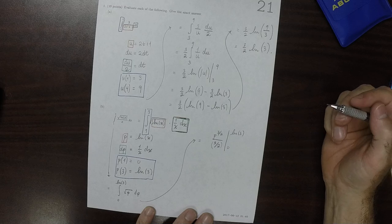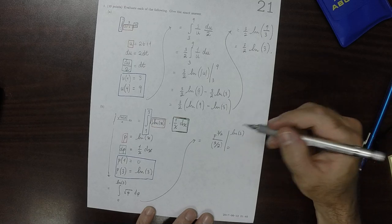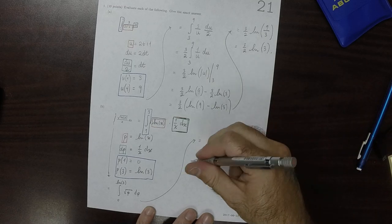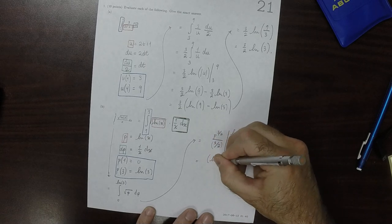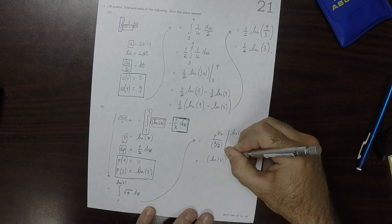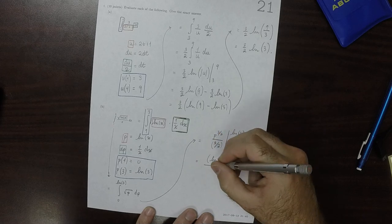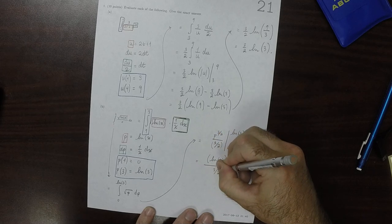Well, plugging in 0, that's really nice, because 0 to 3 halves is just 0. So then the answer is the natural log of 3 to exponent 3 halves, and then divide by 3 halves.